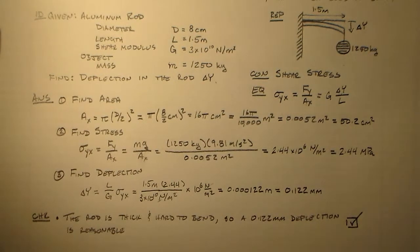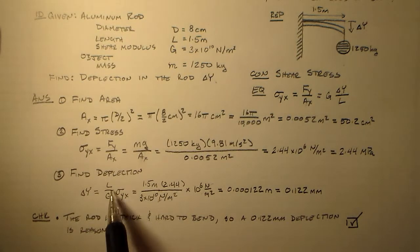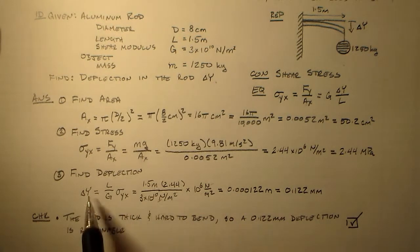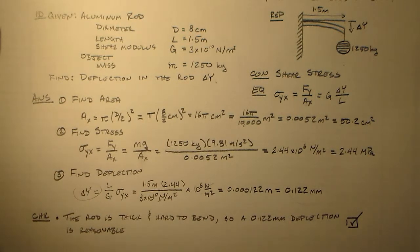So a 0.122 millimeter deflection is reasonable. That's awesome. And, you know, any old day we could just check the units and say, oh, look. I've got a length. I've got a length delta y. It's in meters. And we're good. So that is a pretty reasonable little problem for you. I hope it helps. And I will see you in class. Bye now.